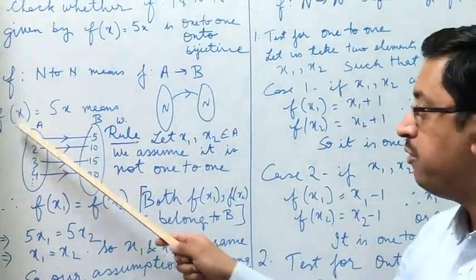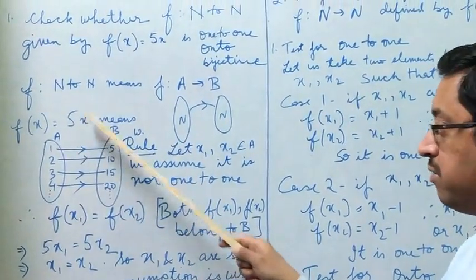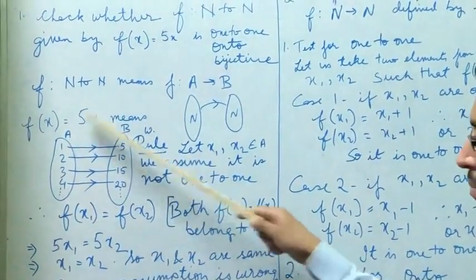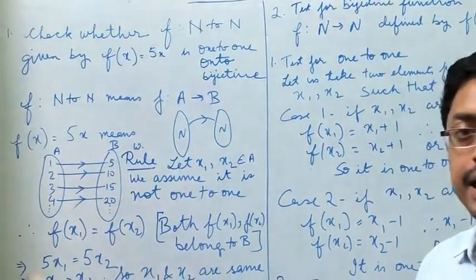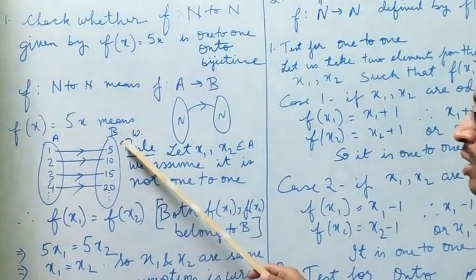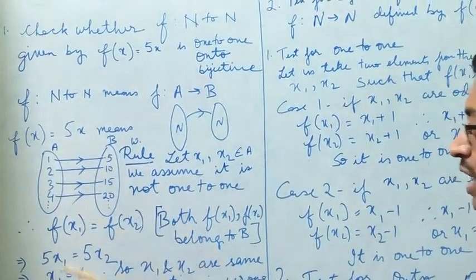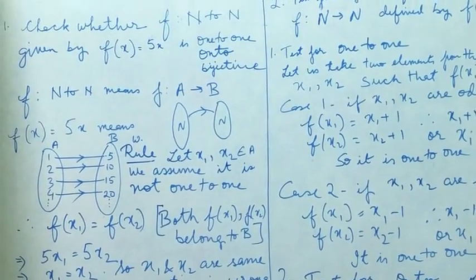If we put 1 we will get 5, if we put 2 we will get 10, 3 will give us 15, 4 will give us 20, and so on. By looking at the mapping it is very clear that every element in set A will give us a unique element in set B. So 1 gives 5, 2 gives 10. It doesn't look like a many-to-one kind of mapping.